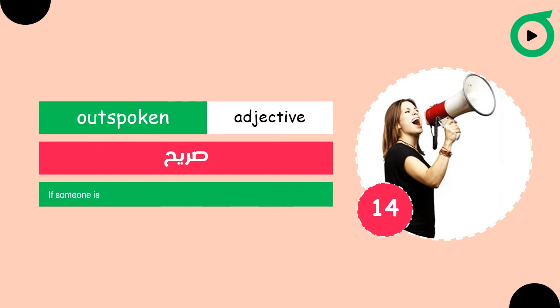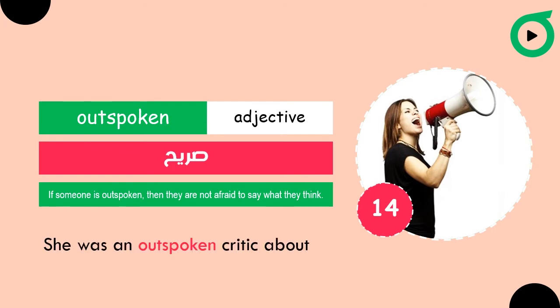Outspoken. If someone is outspoken, then they are not afraid to say what they think. She was an outspoken critic about the new banking laws.